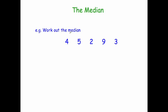Here we've got the numbers 4, 5, 2, 9 and 3, and we've been asked to work out the median. So let's arrange them numerically from smallest to largest: 2, then 3, then 4, then 5, then 9.